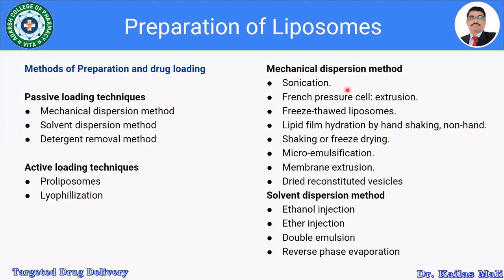In the case of the mechanical dispersion method, it is possible to prepare liposomes by using sonication, French pressure cell extrusion, freeze-thaw liposomes, lipid film hydration by hand shaking or non-hand shaking, freeze drying, micro emulsification, membrane extrusion, and dried and reconstituted vesicles. Membrane extrusion, sonication, and French pressure cell extrusion are used to reduce the size of the prepared vesicles.